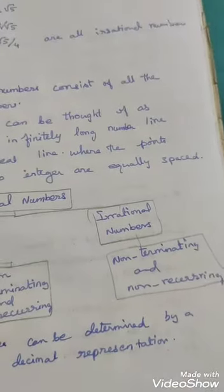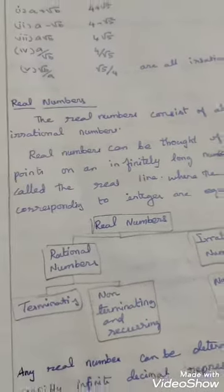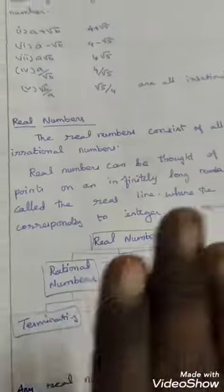Non-terminating and non-recurring numbers are called irrational numbers. So the overall is called real numbers.